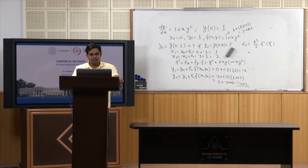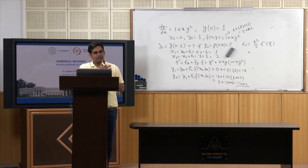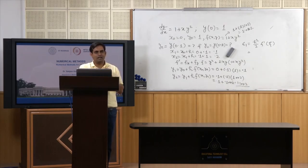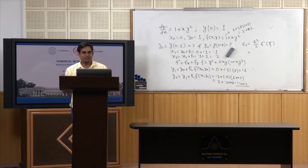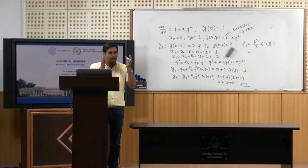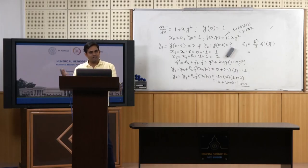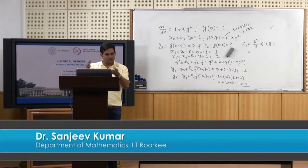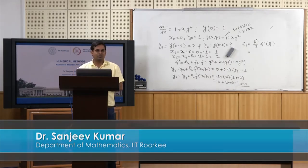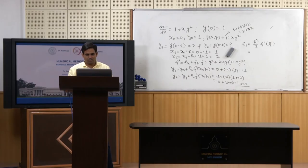With this, I will end this lecture. Today we have learned Picard's method and Euler's method. In the next lecture we will discuss a more accurate modification of Euler's method and the Taylor series method — where instead of taking only the first-order term in the Taylor expansion, we will also include the second-order term, reducing the error. Thank you very much.